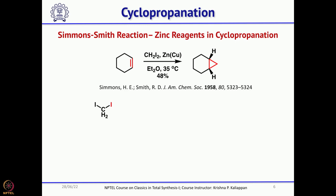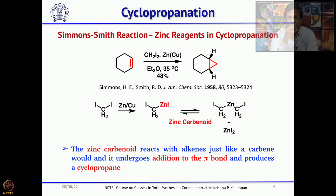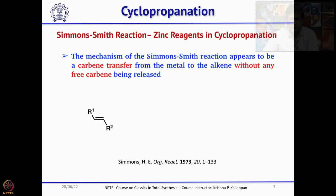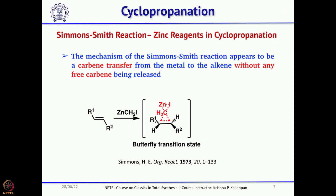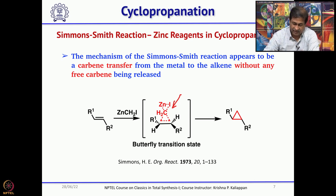Simmons-Smith cyclopropanation was reported way back in 1958. It is believed to go through a zinc carbenoid-type mechanism — similar to how a carbenoid undergoes cyclopropanation, but here zinc is the metal, so a zinc carbenoid undergoes cyclopropanation of a normal double bond. The mechanism proceeds through a three-membered transition state followed by removal of zinc iodide, which delivers the CH₂. Based on the products and mechanistic studies, no free carbene is involved — always the metal carbenoid is involved.